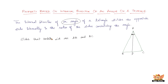What we can conclude from this statement is that AB/AC — that is the ratio of the sides containing angle A — is going to be equal to BD/DC. Because that's what the property says: it's going to divide line BC in the ratio of the sides containing the angle, so AB/AC = BD/DC.